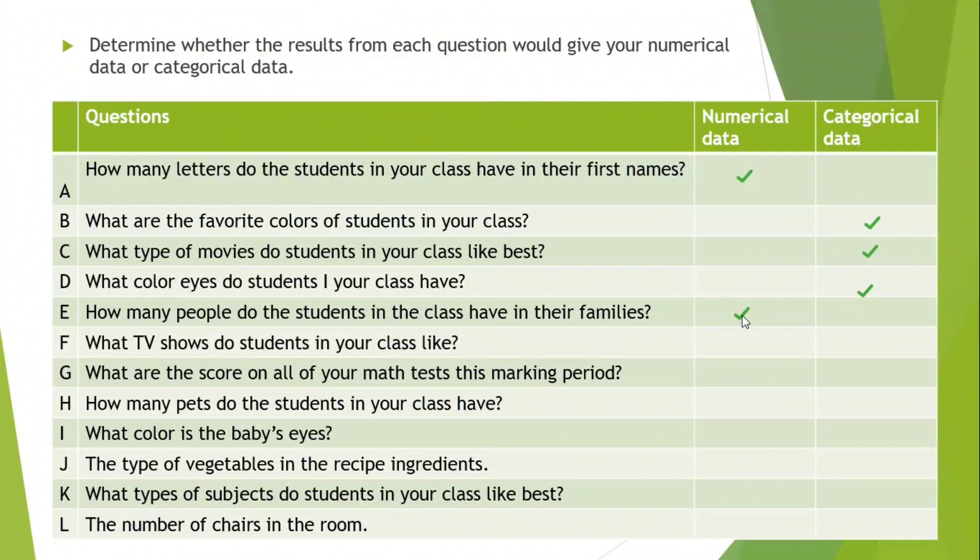F, what TV shows do students in your class like? They will say the name of the show. So this is categorical. G, what are the scores on all of your math tests this marking period? He's asking about your marks in the math test. So this is numerical. H, how many pets do the students in your class have? He wants to know the number of pets. So this is numerical. I, what color is the baby's eyes? So this is categorical.